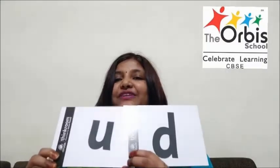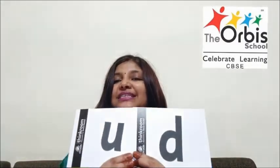Hello everyone. In part 2 we will be doing the 'ud' words. We know the sound of 'u' is 'u' and the sound of 'd' is 'd'. So together it makes 'ud'. Now let's see a few words with 'ud'.